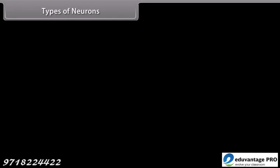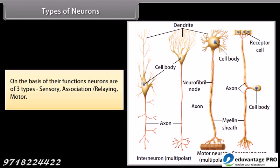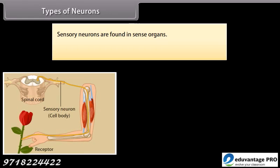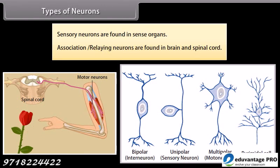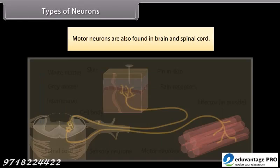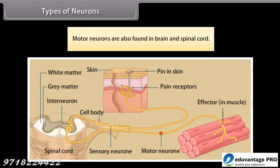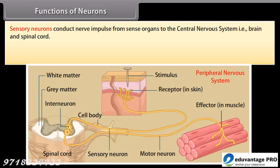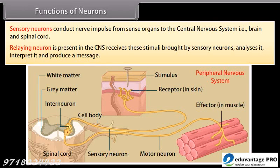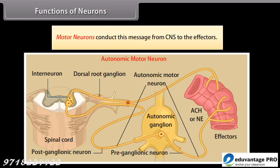On the basis of their functions, neurons are of three types: sensory, association/relaying, and motor. Sensory neurons are found in sense organs; association/relaying neurons are found in brain and spinal cord; motor neurons are also found in brain and spinal cord. Sensory neurons conduct nerve impulses from sense organs to the CNS. Relaying neurons in the CNS receive these stimuli, analyze and interpret them, and produce a message. Motor neurons conduct this message from the CNS to the effectors.